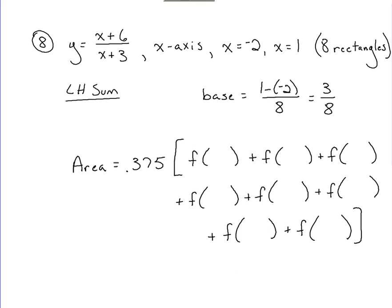So I've set up my eight function notations. And now, since this is a left-hand sum approach, I'm going to start at the left-hand side of my interval, which is at negative 2. Take negative 2, plug in. And now to figure out what I'm plugging in to this next function notation here, I'm going to take negative 2, I'm going to add on my base length. That value will go in here. Once I get that value, I will add on 0.375 again. That number will go in this position. Add on 0.375 again. That number will go in this position. And I repeat that pattern until I get down to this last function notation.